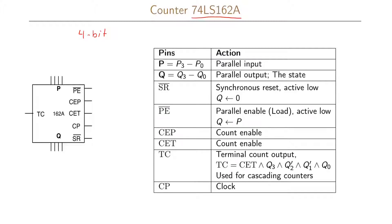Other counters similar to this but with a slightly different name could instead be 4-bit counters that count up to 15 and then start over at 0. Now let us look at the inputs and outputs to and from this counter.